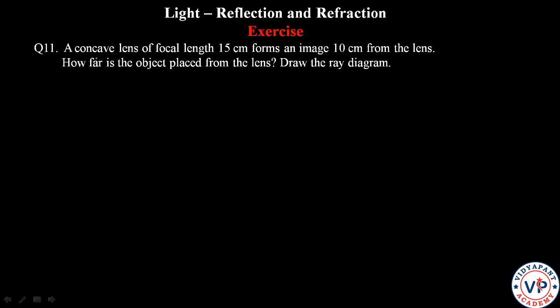Question number 11, what are we talking about? A concave lens of focal length 15 cm forms an image 10 cm from the lens. How far is the object placed from the lens? Draw the ray diagram.